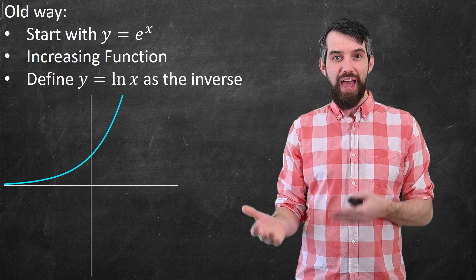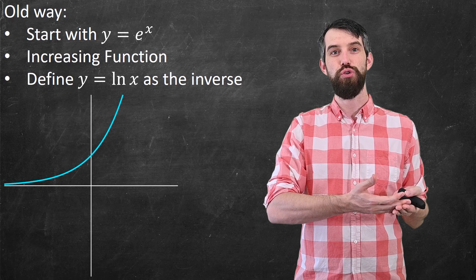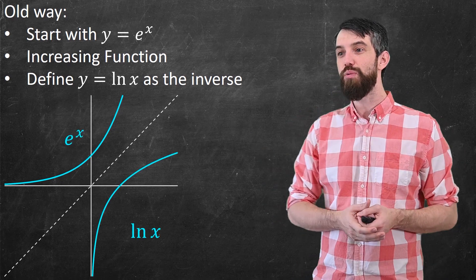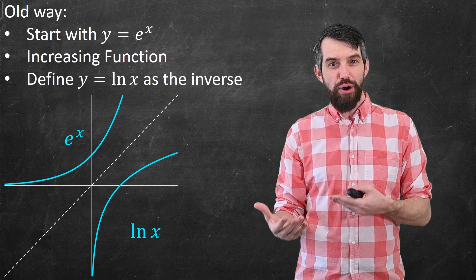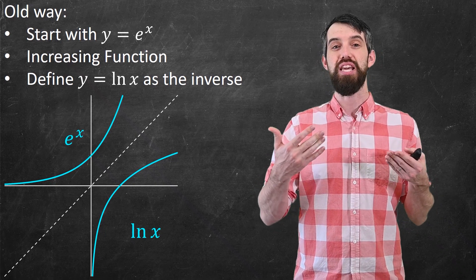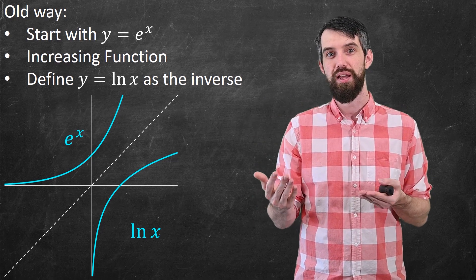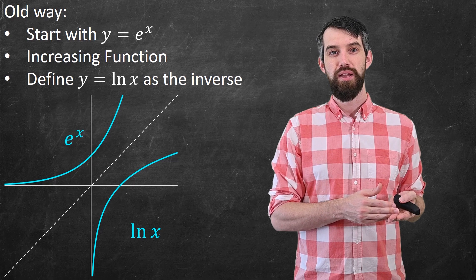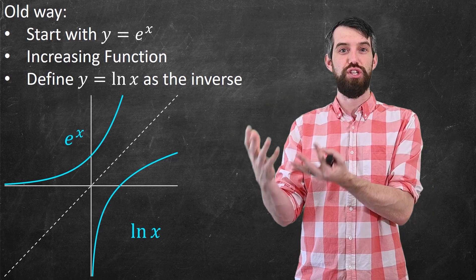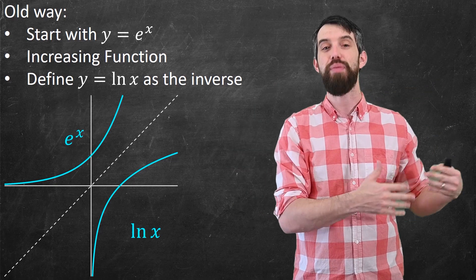The logarithm of x was defined to be the inverse function to the exponential. An inverse function is going to reflect over the line y equals x. So if I plot the line y equals x, then logarithm of x is what appears on the bottom — that is the reflection around y equals x, the inverse function to the exponential function.